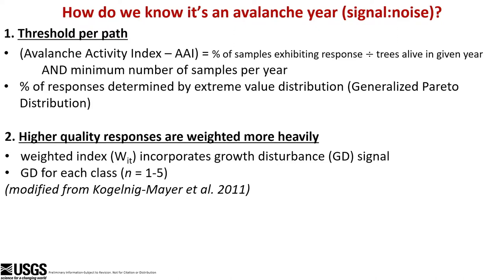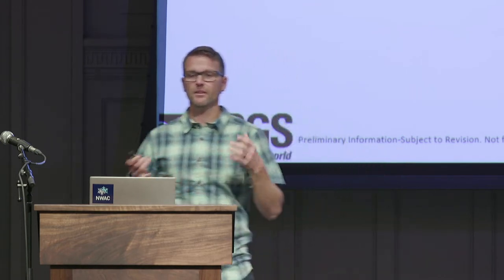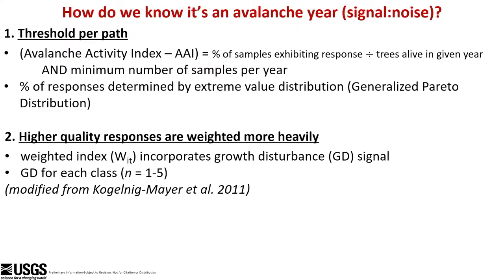One way is we do a threshold per path. We take what's called an avalanche activity index for that path and look at the percentage of samples that exhibit an avalanche signal or a scar. In any given year we divide that by the trees alive in that year, and we fit a distribution to an extreme value distribution — because we're looking at extreme events. That gives us a threshold, which reduces the noise. Another way is those high-quality class one and two measurements are weighted more heavily than the other samples.